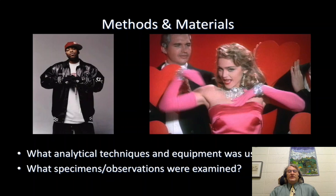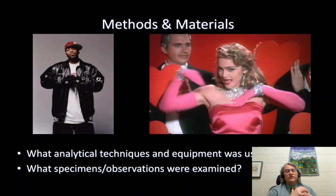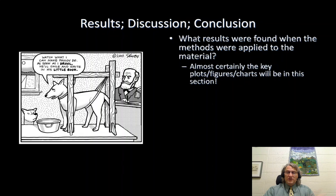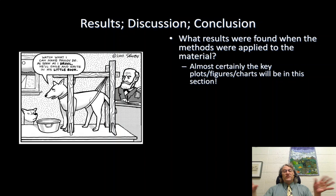But then, going to the heart of the paper, are the methods and materials. The methods: what analytical techniques did you use, what equipment did you use? And this is important so people could try to duplicate your results. Then what specimens or particular observations were examined — those are the materials. And then what happened when those methods were applied to those materials? That is, what were your results? What came out of your analytical observations and analytical methods? In this section of the paper, almost certainly, there's where the key charts and key plots come out.